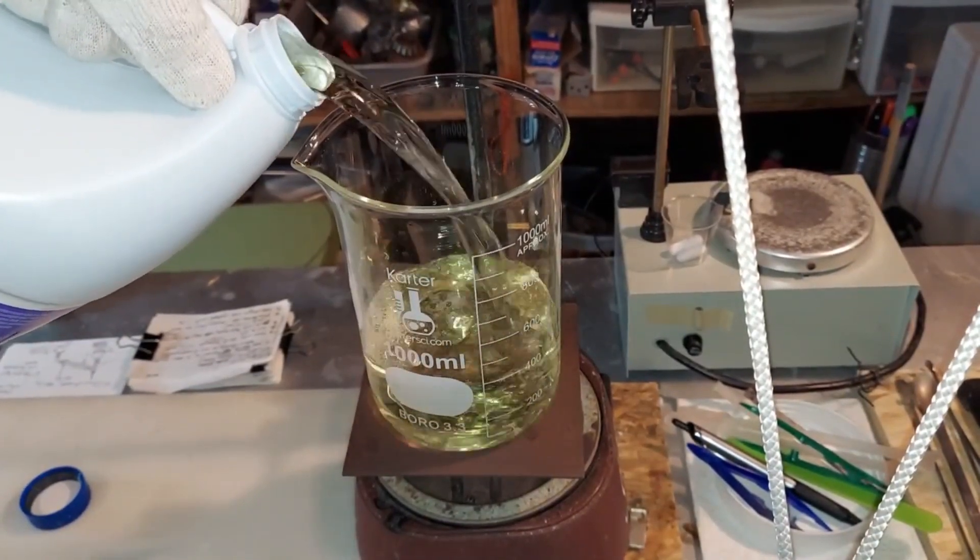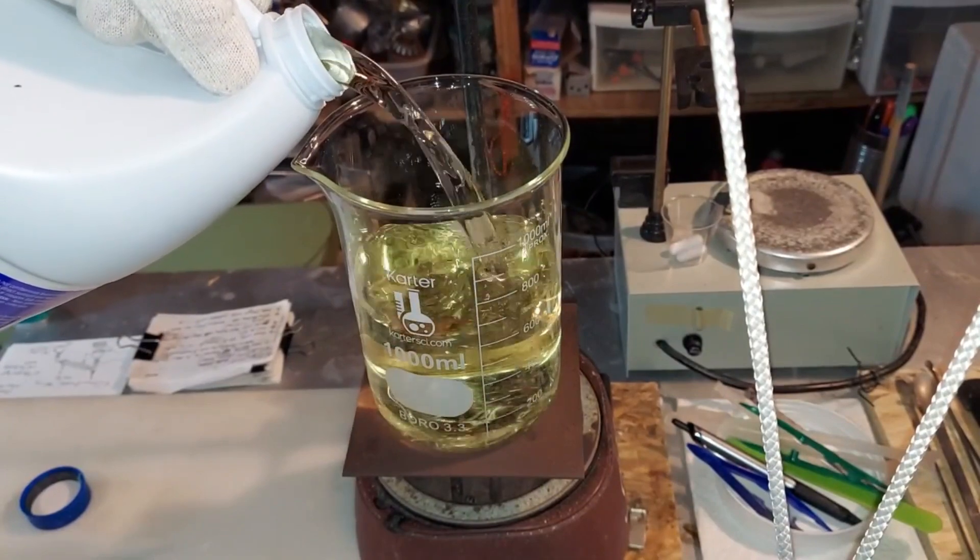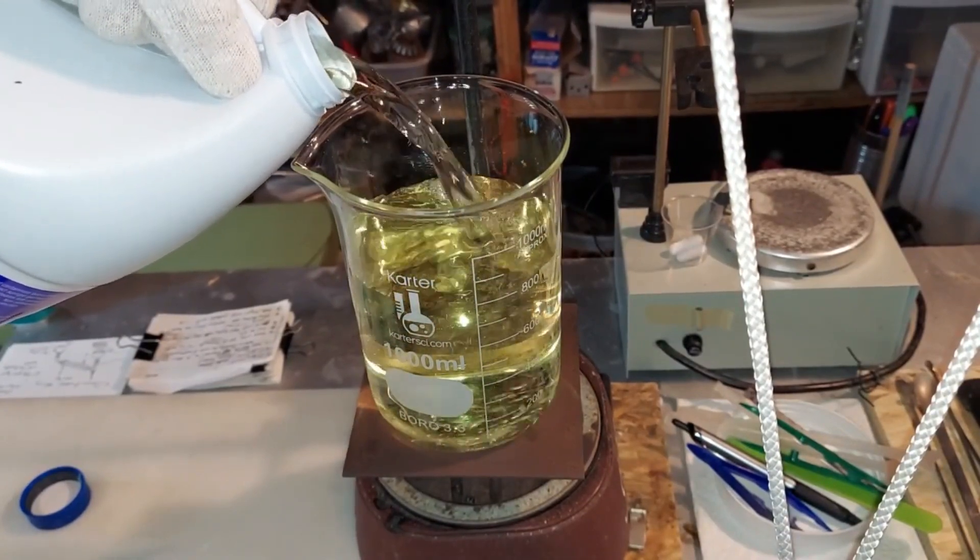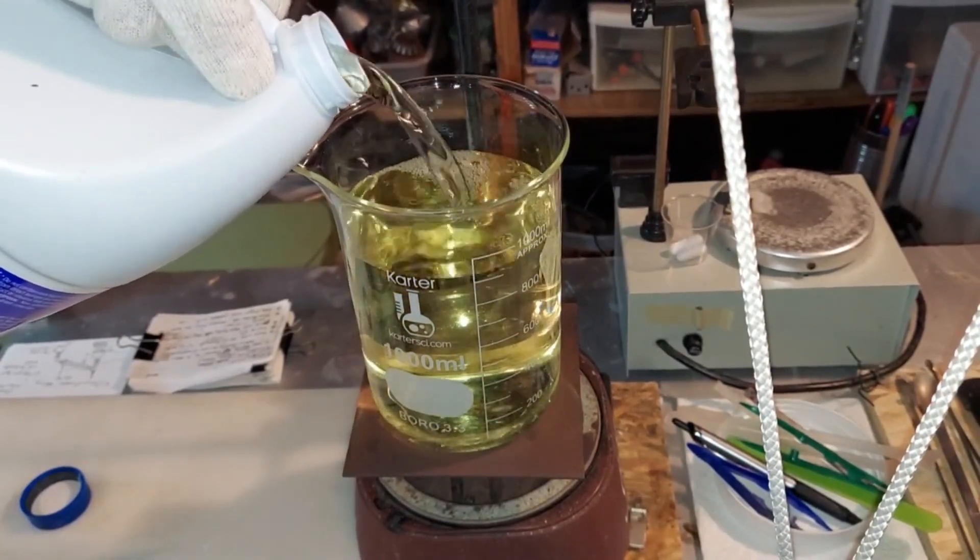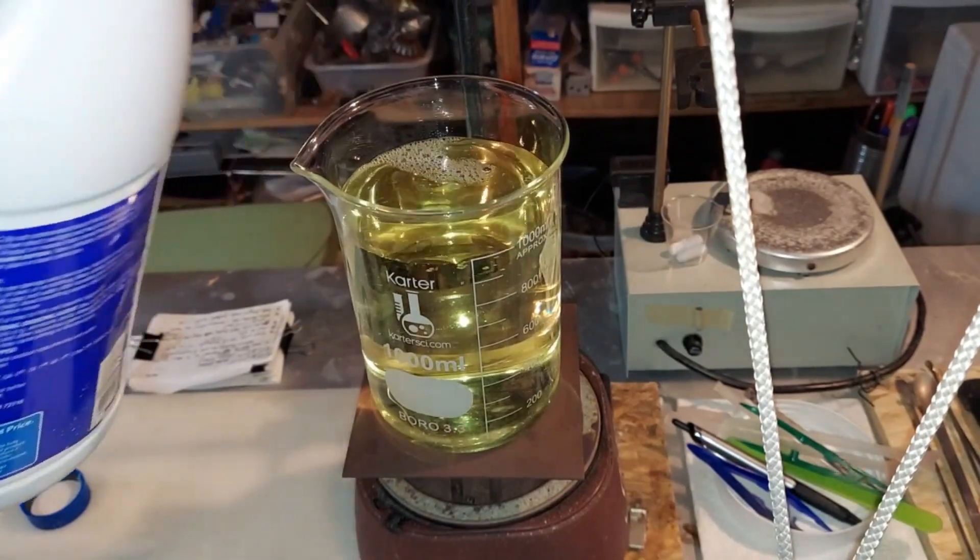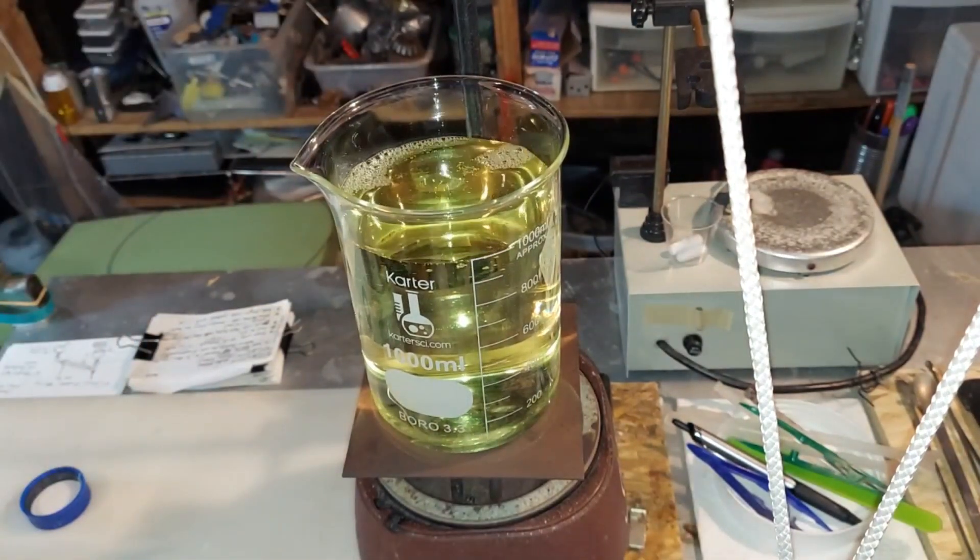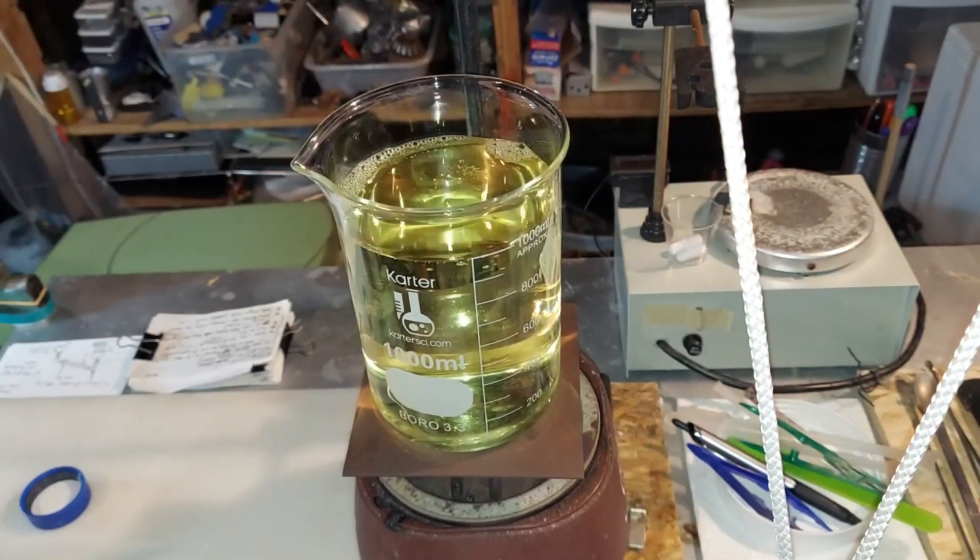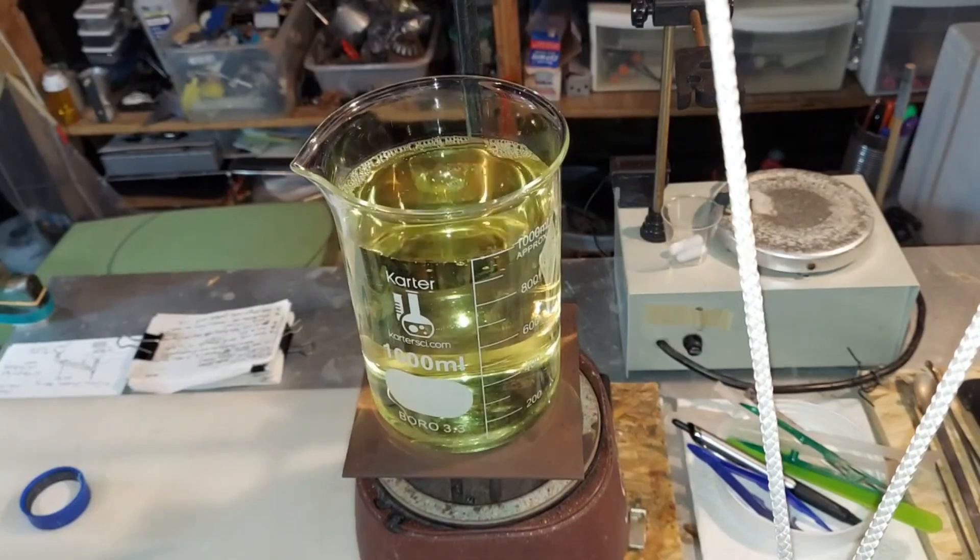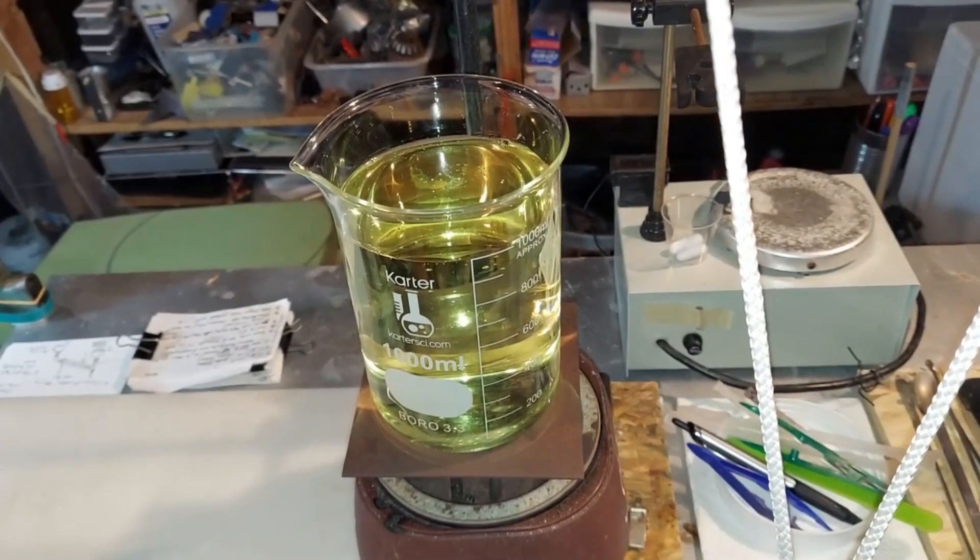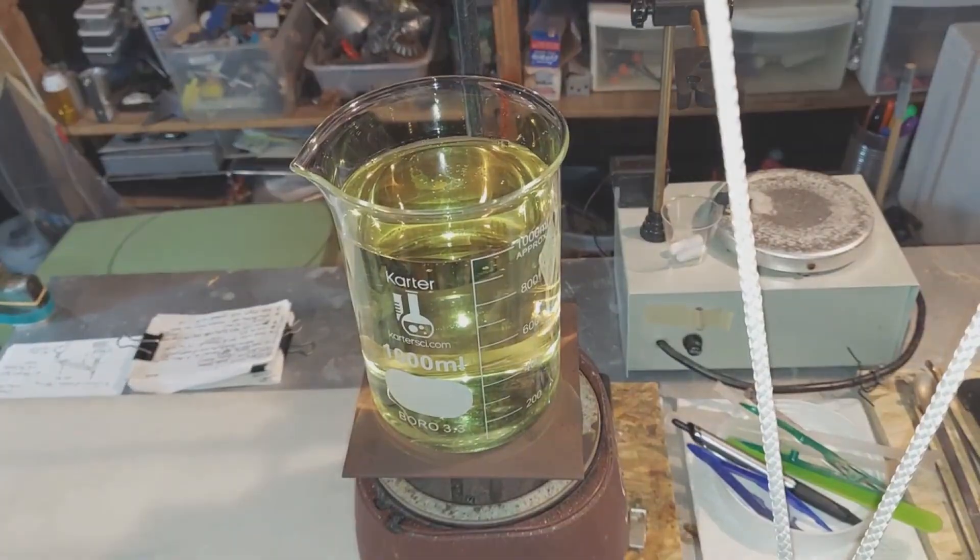Adding one liter of regular bleach to a one liter beaker. All right, and turn it on down here. Start heating it up and lower the fume hood. We need to boil this down until we see crystals. At that point we're going to stop and cool it down.